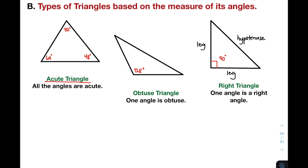Let's move on with the next example. We have here the obtuse triangle. When we say obtuse triangle, meaning one of the angles is obtuse. As you can see, we have here angle 128 degrees, which is classified as an obtuse angle. Therefore, this one is an obtuse triangle. And how about the measurement of the other angles? Obviously, these angles are all acute angles.